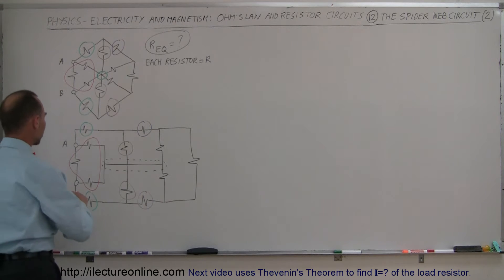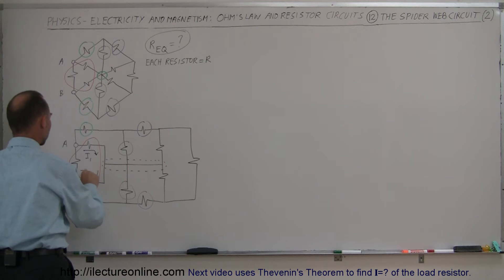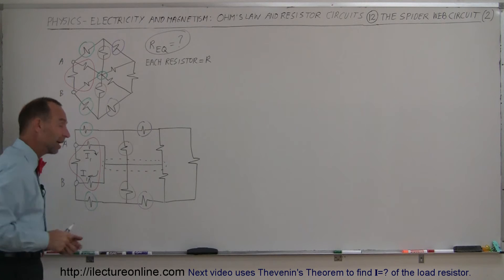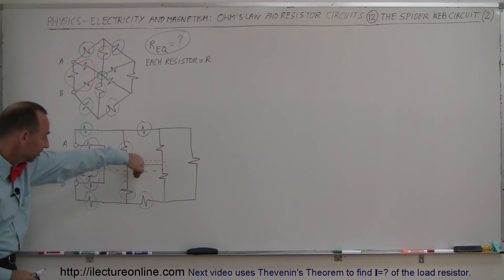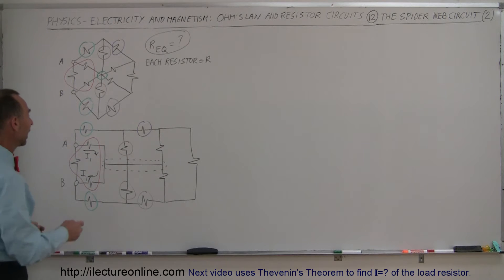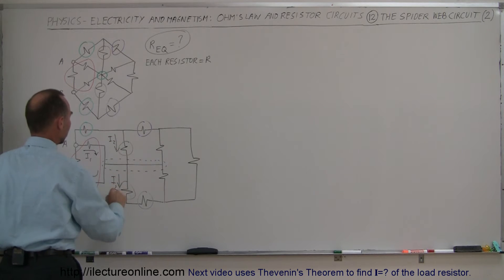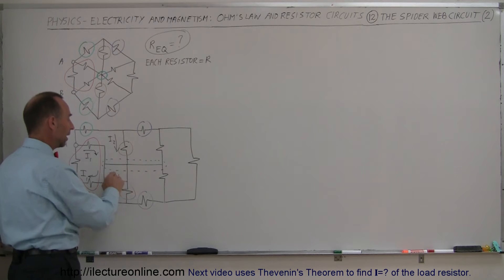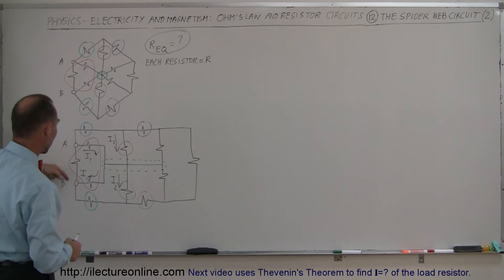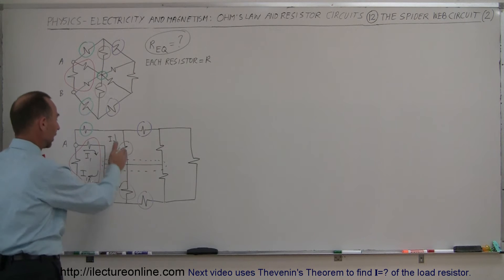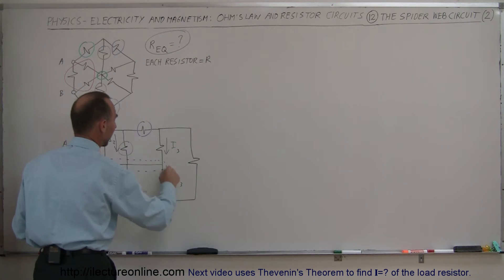Whatever current flows to this resistor here — let's call that I1 — must be exactly the same as the current over here, because it's an exact duplicate shape. Whatever current flows to the top must flow in exactly the same way to the bottom. The current through this resistor, I2, must be exactly the same as I2 down there. And if we call this current I3, that means this has to be exactly the same as I3 at the bottom right there.